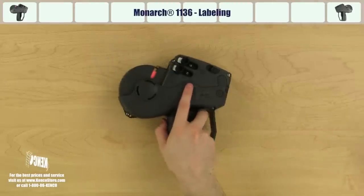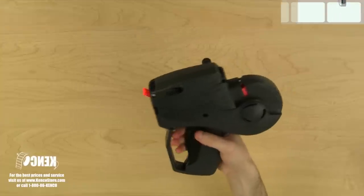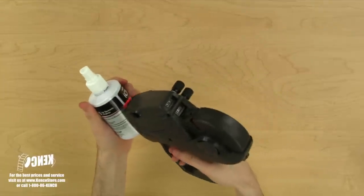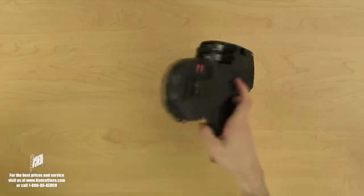To label an item, simply pick up the gun, squeeze and release the trigger once, hold the price gun directly over the product, then just roll the label on your product and you're all done.